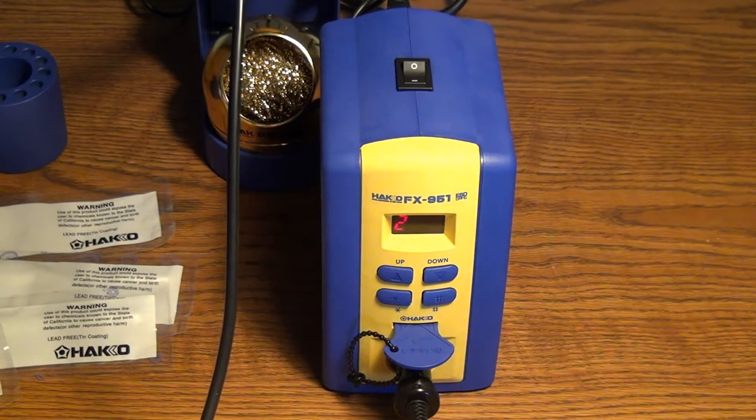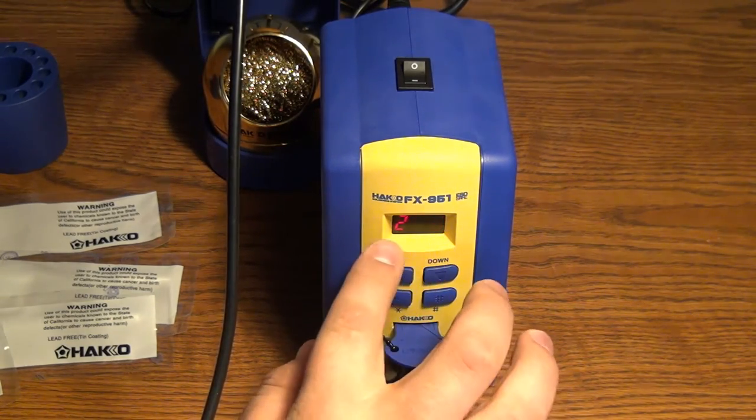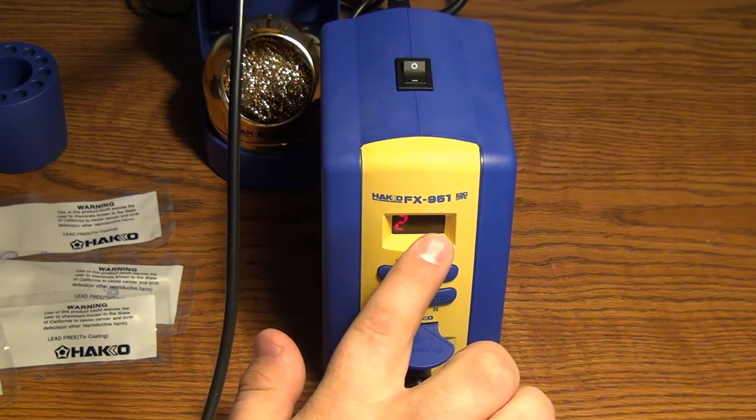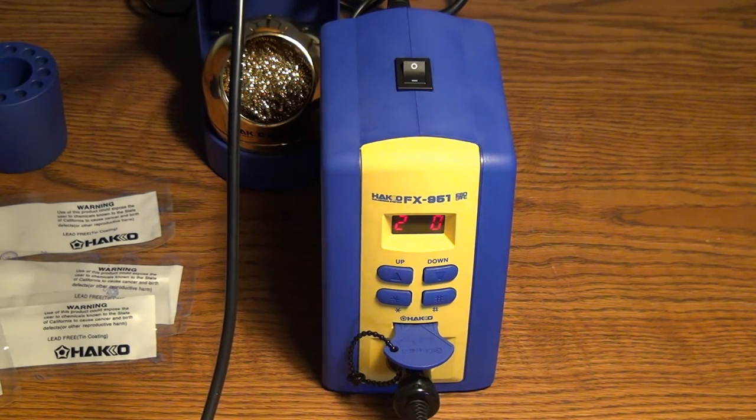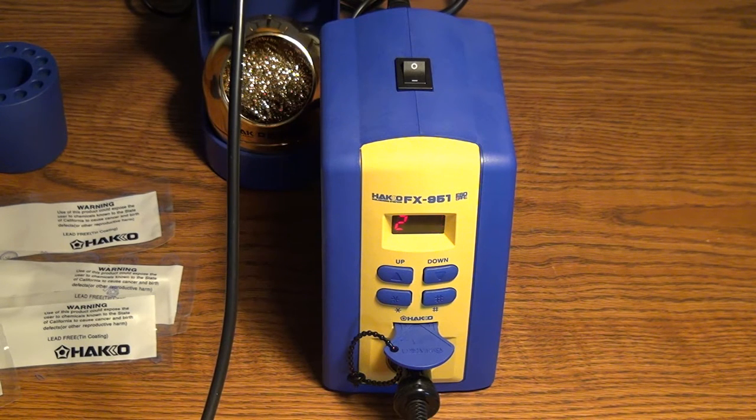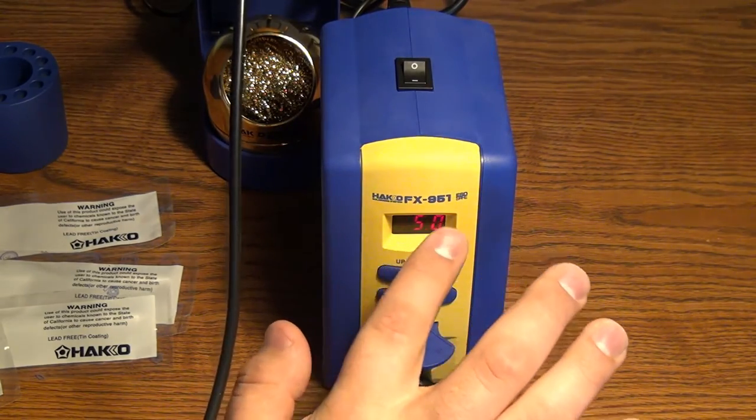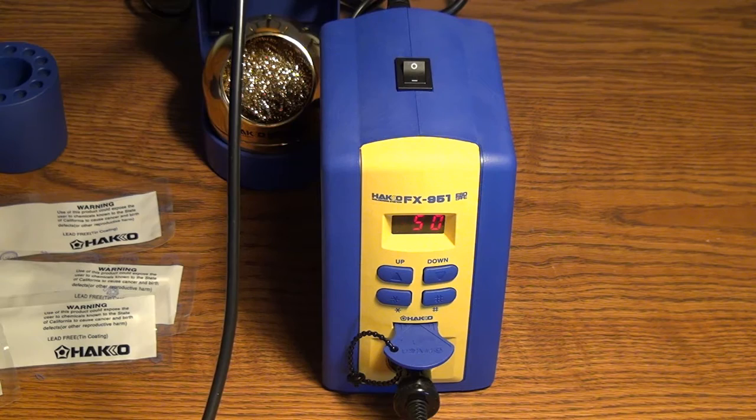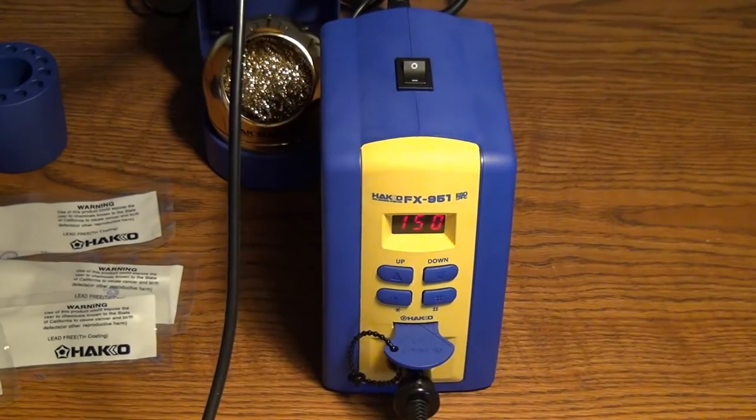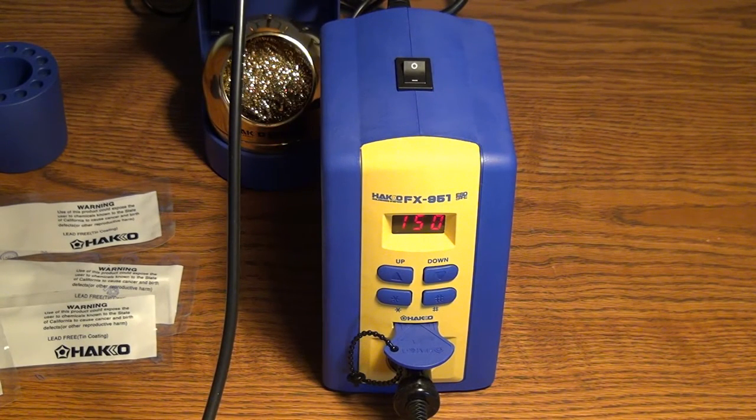This is setting number one and this is what you're changing. To go ahead and forward to the next setting you hit star. This is the sleep setting. So what this says is whenever you hang up the iron immediately, because it's a zero, the iron goes to sleep and idles at that 200 degrees Fahrenheit. Star to continue. This right here is the cold tip setting warning.